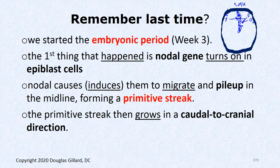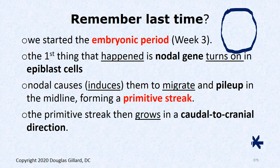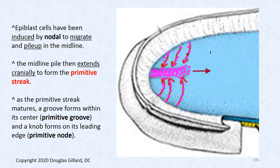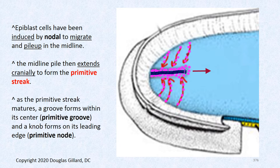As they pile up they start to move forward, forming what's called a primitive streak, which goes about 50% of the way. Epiblast cells migrate in and form a primitive streak, which grows in a caudal to cranial direction. Watch out — a test question might say the primitive streak grows cranial to caudal, which is wrong. It grows from the caudal region to the cranial region. As the streak matures, you get a groove called the primitive groove, a primitive pit, and a primitive node.